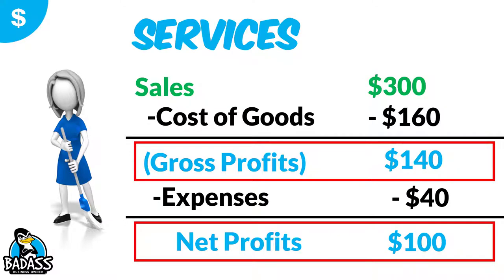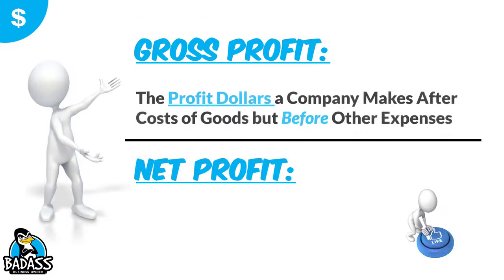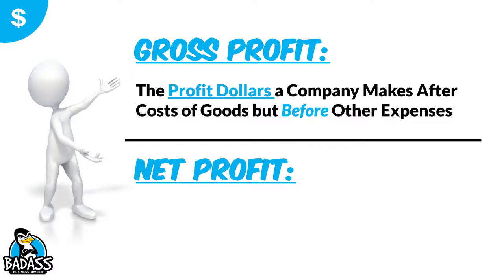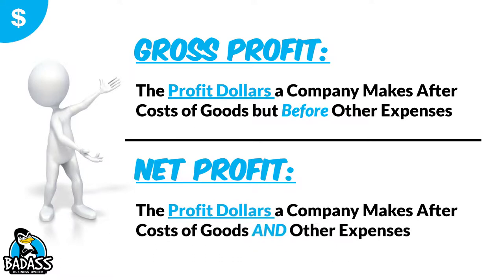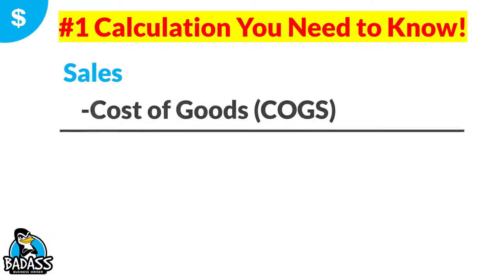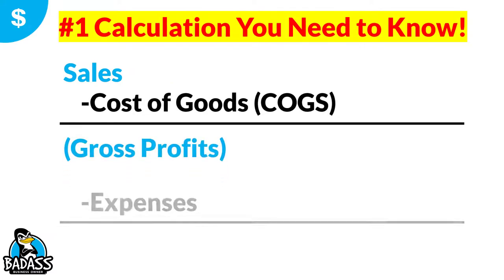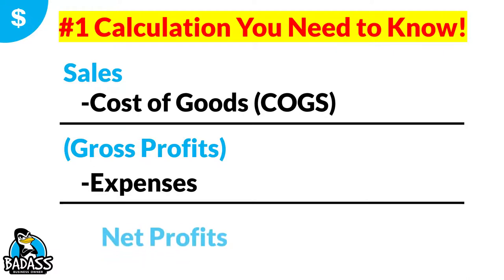You'll see that it flows the exact same way. Just remember: gross profit is the profit dollars a company makes after cost of goods but before other expenses. And net profit is the profit dollars a company makes after cost of goods and other expenses. Once again, your number one calculation — sales minus cost of goods equals gross profits, minus those expenses gives you your net profits.